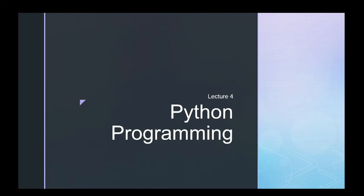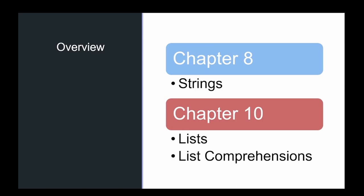Welcome to the fourth lecture in this series on Python programming. Today we're concentrating on chapters eight and ten in our Think Python book. Chapter eight is going to go into strings and ten is going to go into lists. I like putting these two together because they really complement each other, and a lot of things you can do with strings you can do with lists as well.